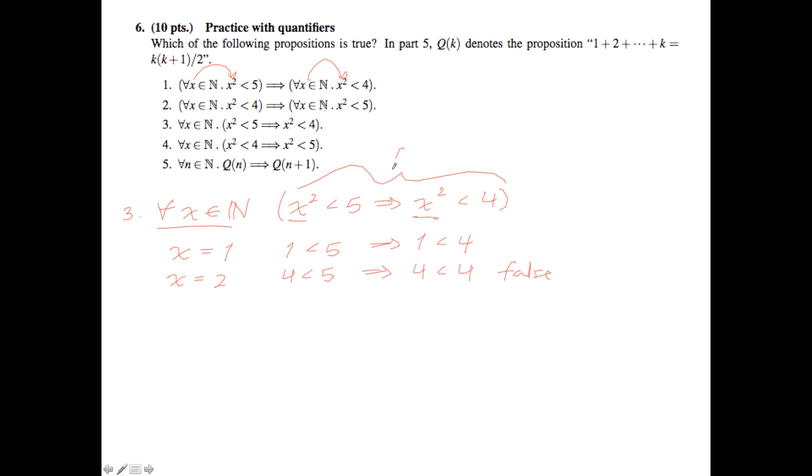So first of all, this is false for some X, which means that the whole thing is false because we were trying to guarantee that it was true for all X and we found one for which it doesn't work. Therefore 3 is false.